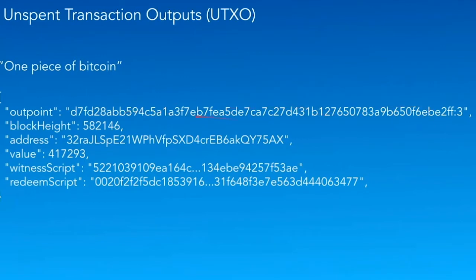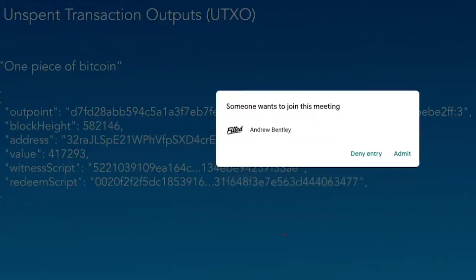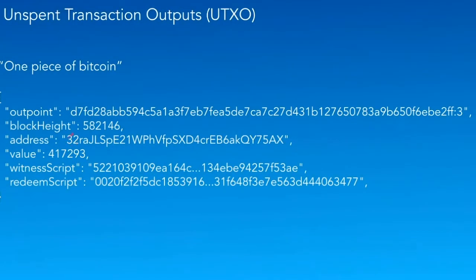The first part of the identifier is the transaction ID that created a piece of Bitcoin. The second part, behind the colon, is which output of that transaction it was. In this case, it is the fourth output, because computer scientists start counting with zero. Transaction D7FD28ABB-something created this piece of Bitcoin. You might also notice the address here starts with a three, which means it's a pay-to-script-hash output — a format that's been around since about 2013.